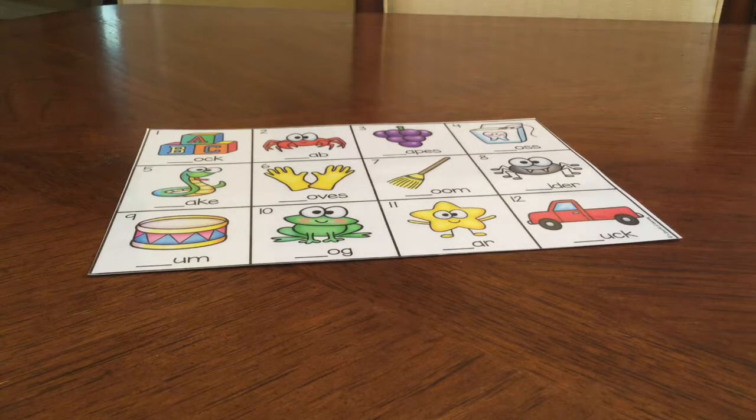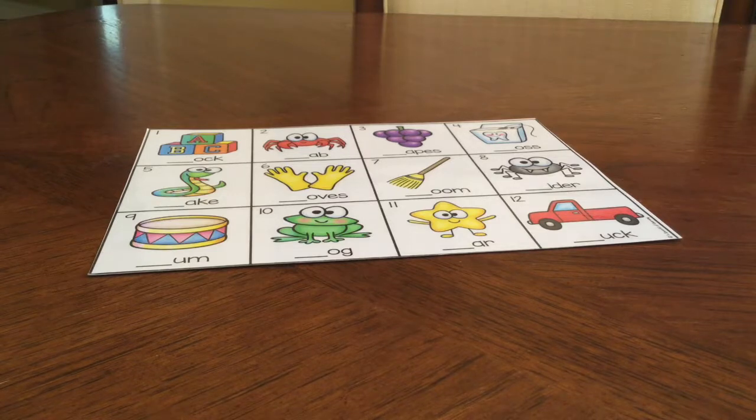Seven, broom. Eight, spider. Nine, drum. Ten, frog. Eleven, star. And twelve, truck.